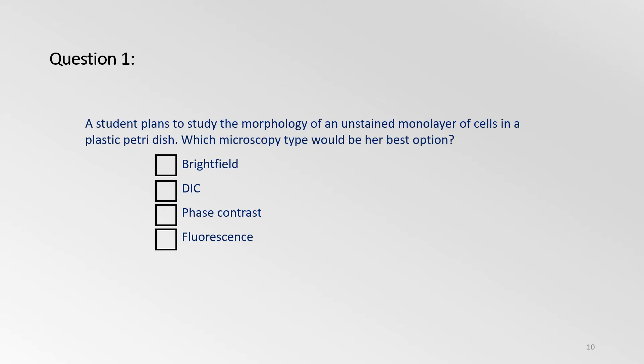Okay, let's try answering this question. A student plans to study the morphology of an unstained monolayer of cells in a plastic Petri dish. Which microscope type would be her best option? Brightfield, DIC, phase contrast, or fluorescence?